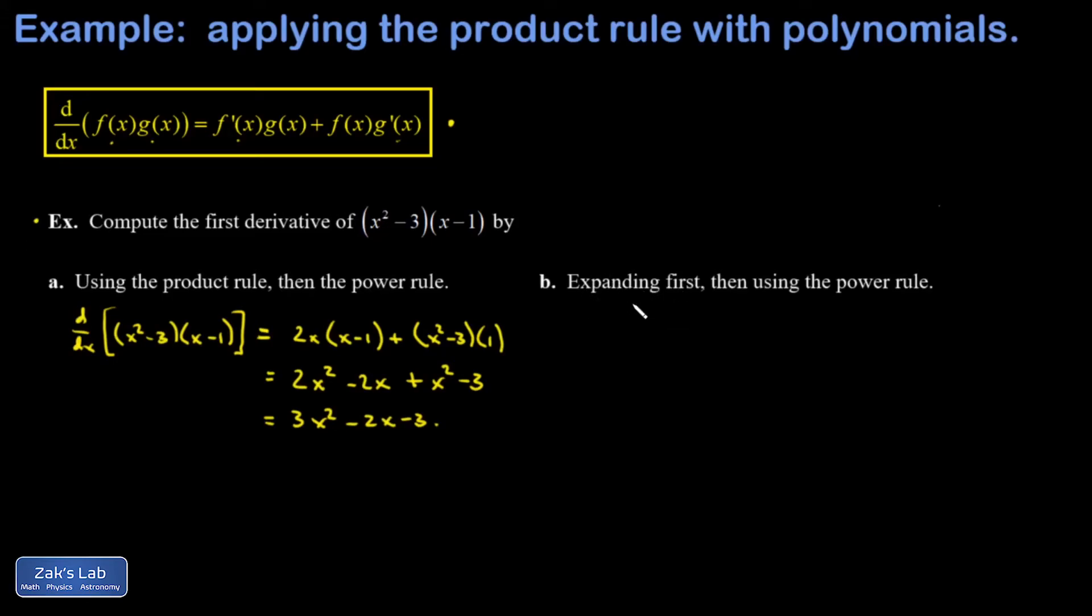In part B, we're asked to do this by expanding first and then applying the power rule. So if I expand this function, I get x cubed minus x squared minus 3x plus 3. And then I can apply the power rule to each one of these terms.